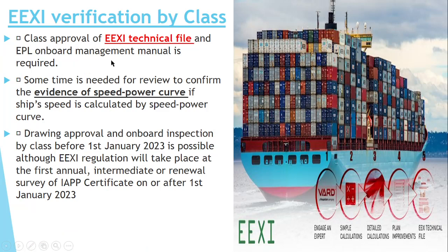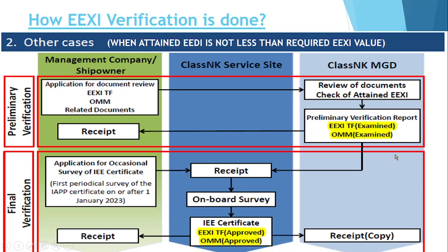Class approval of the EXI technical file and EPL on-board manual requires time for review to confirm the evidence of the speed-power curve. If your V-reference speed is calculated by the speed-power curve, you need that speed-power curve as evidence. So the three documents needed are: the EXI technical file, the on-board manual, and evidence of the speed-power curve, to be presented along with the IEE certification. This approval and on-board inspection by the class must be completed before 1st January 2023, and after 1st January 2023 you carry out the on-board verification at renewal of the IEE certification survey.